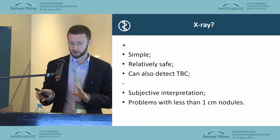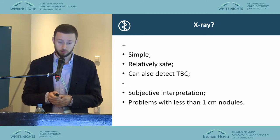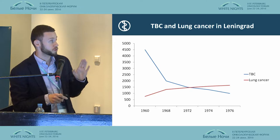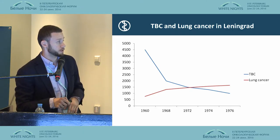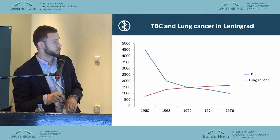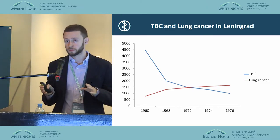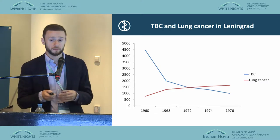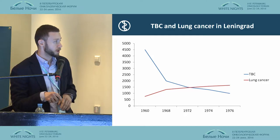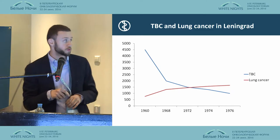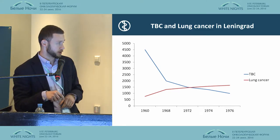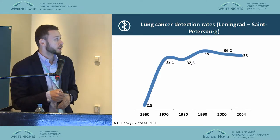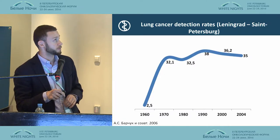The advantages of X-ray are that it is a relatively simple, safe, and cheap method, and it can also detect tuberculosis. The disadvantages include subjective interpretation and problems detecting nodules less than one centimeter. In the Saint Petersburg region in the 1960s, tuberculosis was a major challenge, and all screening methods were aimed at identifying TBC. Over time, we realized that X-ray for TBC could also find lung cancer. As TBC rates went down and lung cancer went up, we started diagnosing more lung cancers than tuberculosis cases.